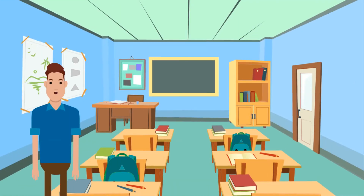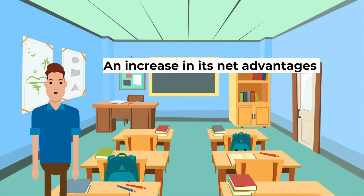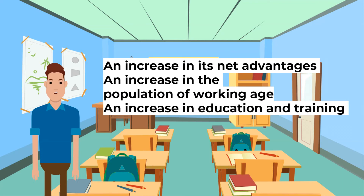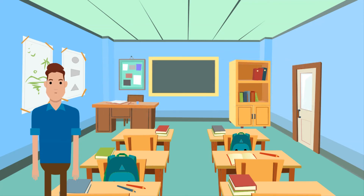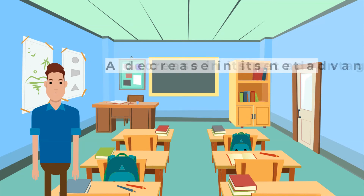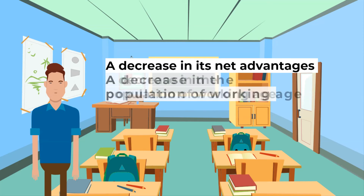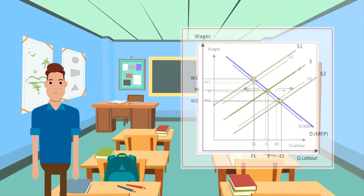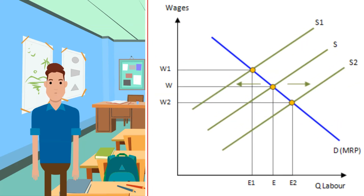How about the supply of labor? What causes the supply of labor for an occupation to increase? An increase in its net advantages, an increase in the population of working age, or an increase in the amount and quality of education and training available in relevant skills. What causes the supply of labor to fall? A reduction in its net advantages, a fall in the population of working age, or a fall in the amount and quality of education and training available in relevant skills. If the supply moves from S to S2, the wage rate falls from W to W2 and more people are employed at E2. If supply falls from S to S1, the wage rate rises from W to W1 and employment falls to E1.